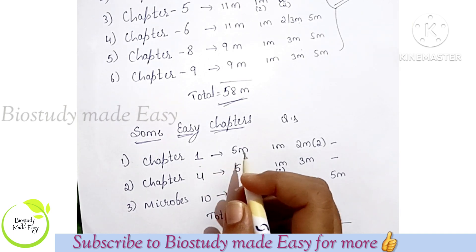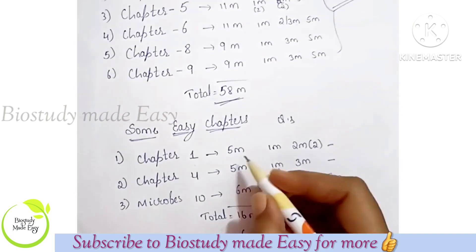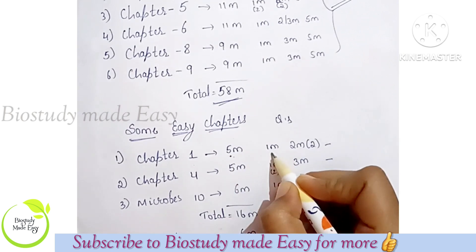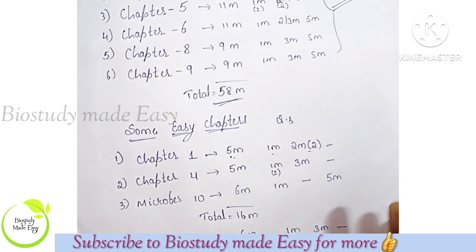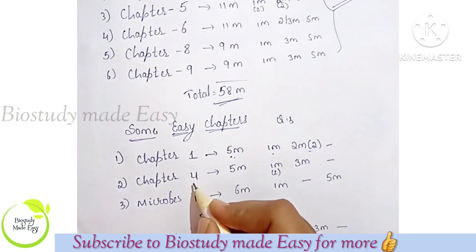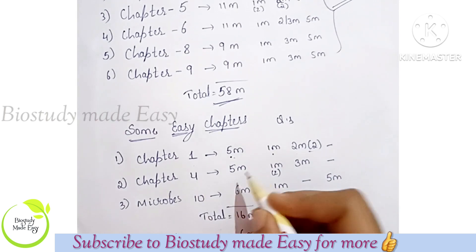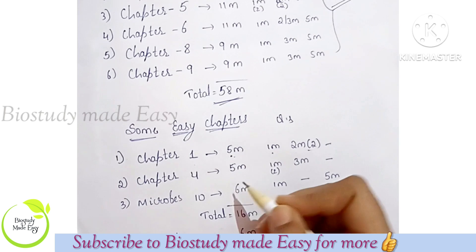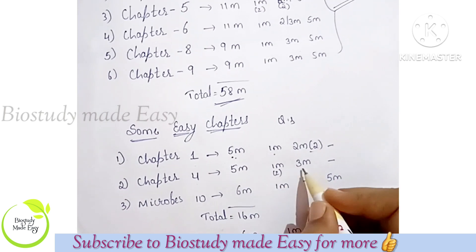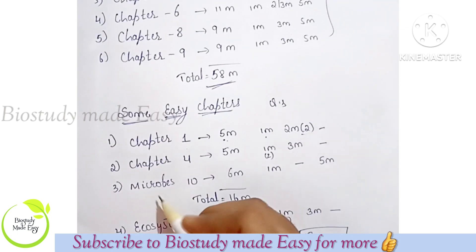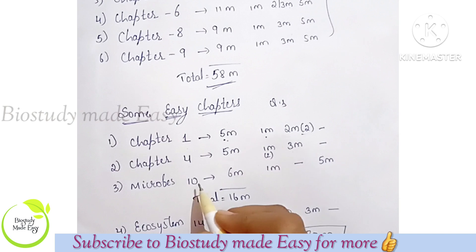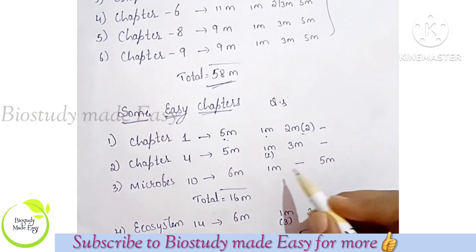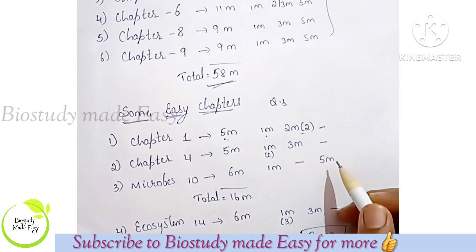Chapter 1 — I will upload a lot of questions and notes. This has 5 marks and 2 marks questions. Next, Chapter 4 — Reproductive Health — this is very easy, 5 marks here, 1 mark and 3 marks, 1 question each. Next Chapter 10 — Microbes in Human Welfare — 1 mark, 1 question; 5 marks, 1 question.